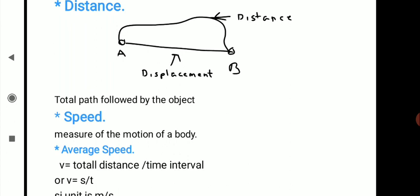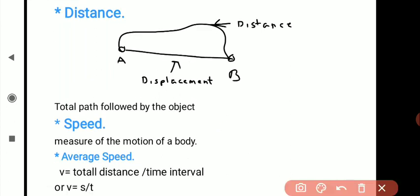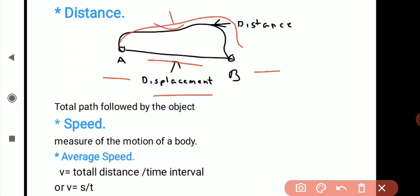The next point is distance. Distance is the total path followed by the object. To understand distance, consider a particle that moves from point A to point B along a curved path. The total length of that path is the distance, whereas the shortest distance between the initial point and the final point is the displacement. So distance is the total path length and displacement is the straight-line distance between start and end points.